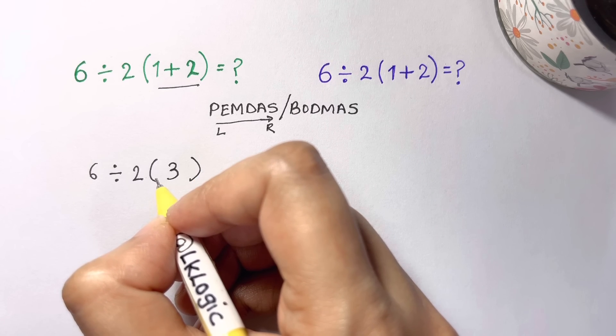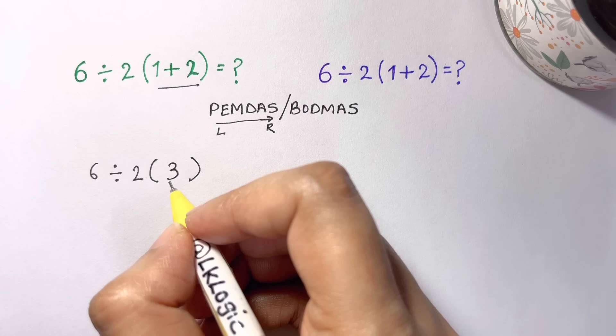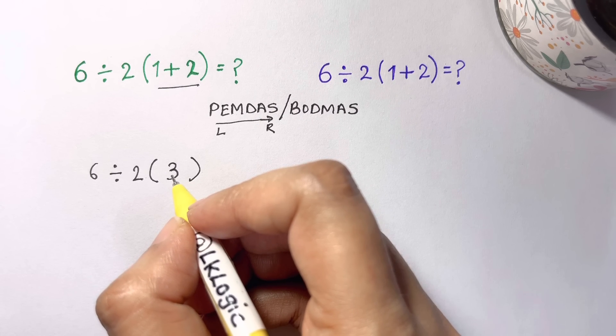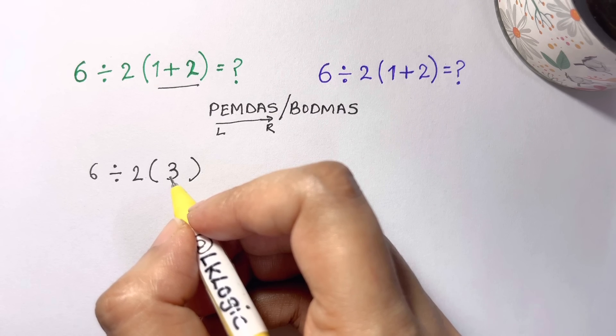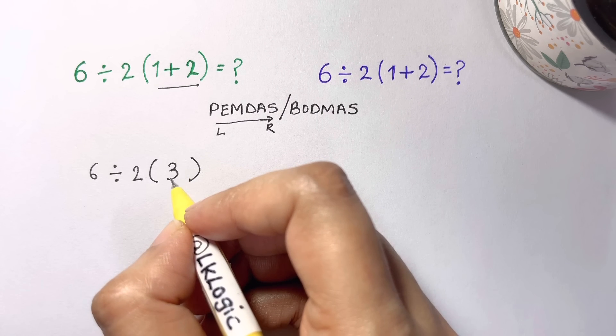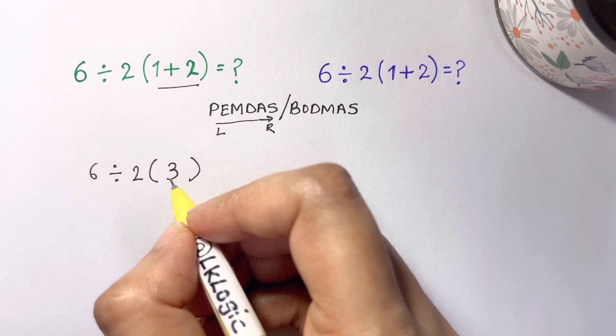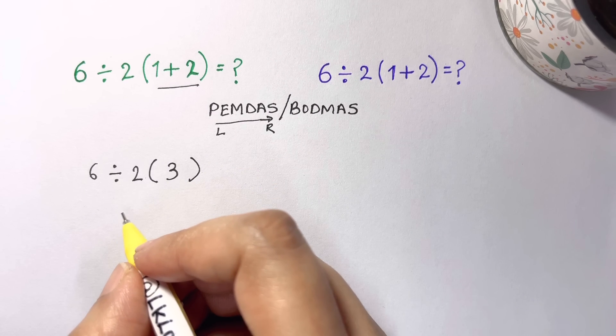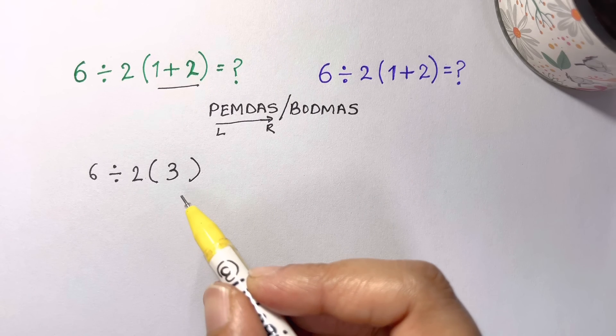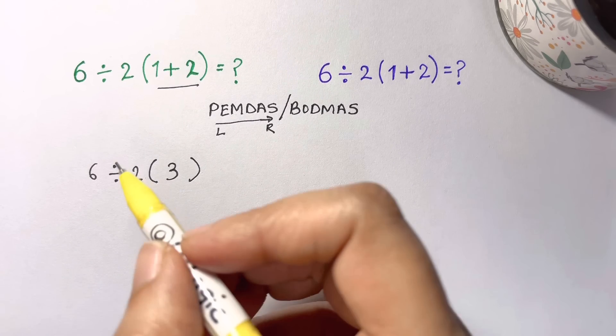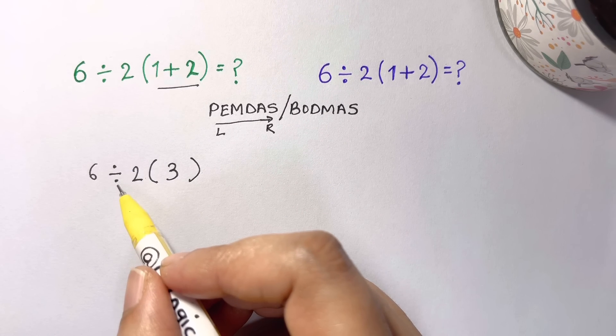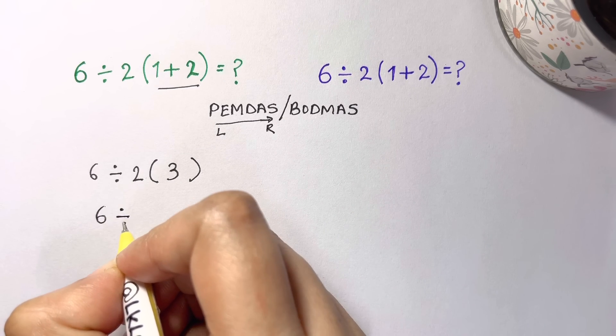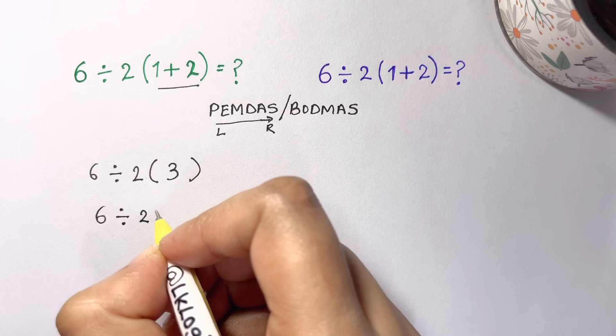Now the question is what to do next. If you input this into Google or any other calculator, the thing that's going to happen next is all of these will interpret the parenthesis as an implicit multiplication. So this two parenthesis three will be converted to two times three. Now we're going to continue with the order of operations. This expression only contains multiplication and division, so it's like six divided by two times three.